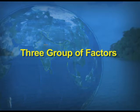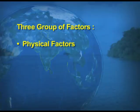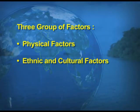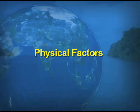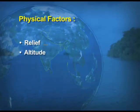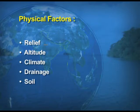There are three groups of factors which affect the types of rural settlements: number one, physical factors; number two, ethnic and cultural factors; and number three, security factors. Under physical factors, relief, altitude, climate, drainage, and the type of soil are important features which determine the type and spacing of settlements.